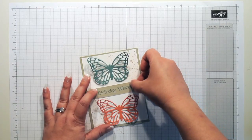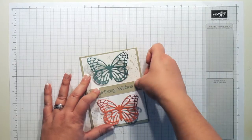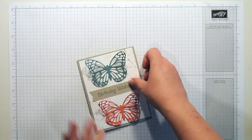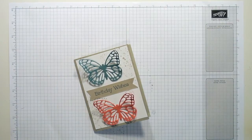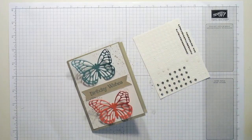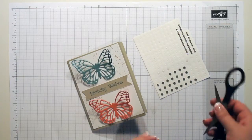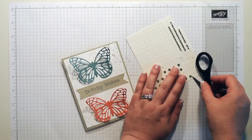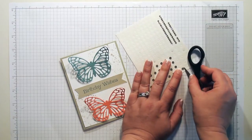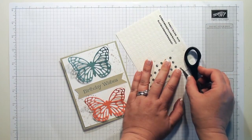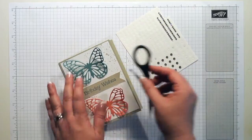Now I could leave the card just like this, but I really want to add some bling to the butterflies. So I've got my rhinestones here, and I just use the tip of my scissors to get the rhinestone. These are also self-adhesive, so the sticky is already on the back.